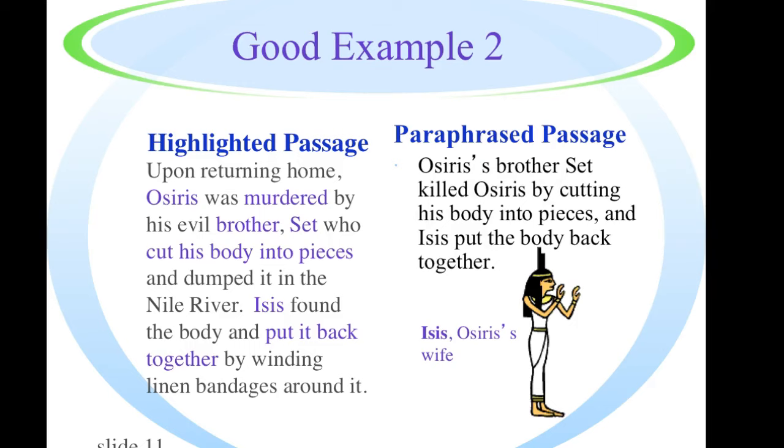So a paraphrase passage that would work would be something like this. Osiris's brother Set killed Osiris by cutting his body into pieces, and Isis put the body back together again. So you see that there are some details like the linen bandages that are left out, but aren't essential to the key understanding of what transpired in terms of this murder.